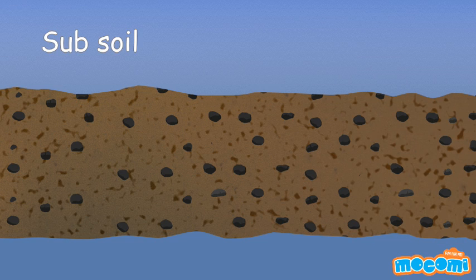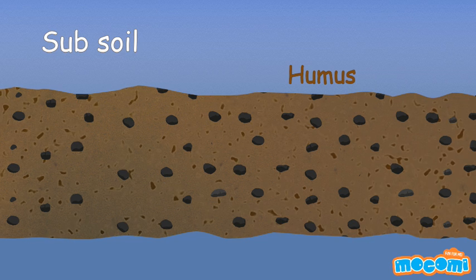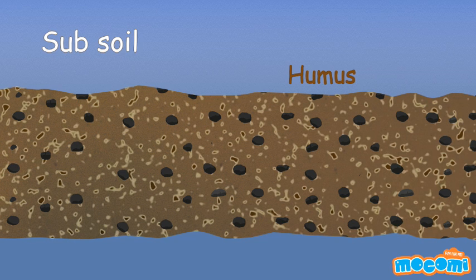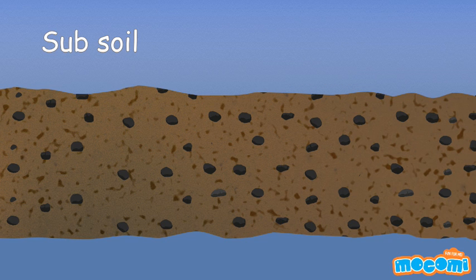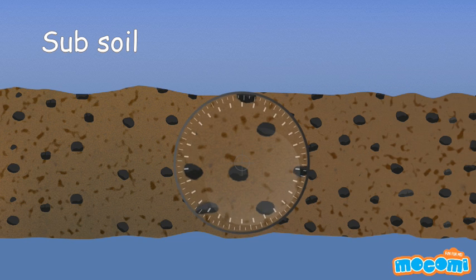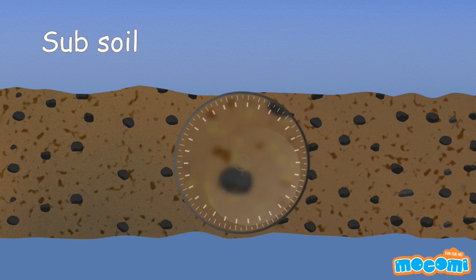Subsoil: The layer of soil just below the topsoil is called subsoil. It is lighter in color and has little humus. It is made up of slightly bigger rock particles, which makes it harder and more compact. It contains very little living organisms.